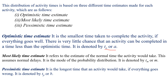Next is the most likely time estimate. It refers to the estimate of the normal time the activity would take, assuming normal delays. It is the mode of the probability distribution. It is denoted by Tm or M.